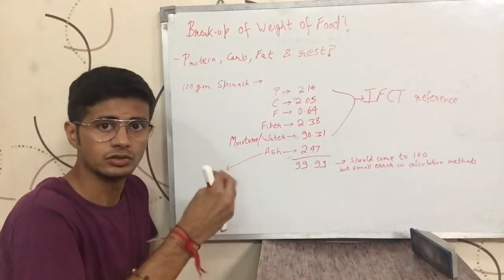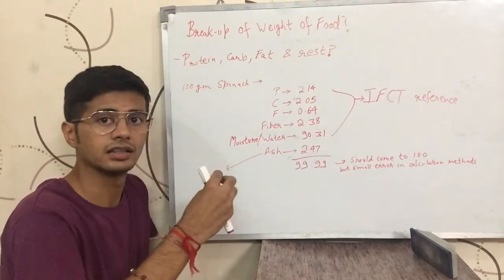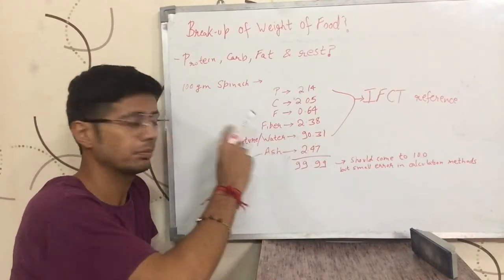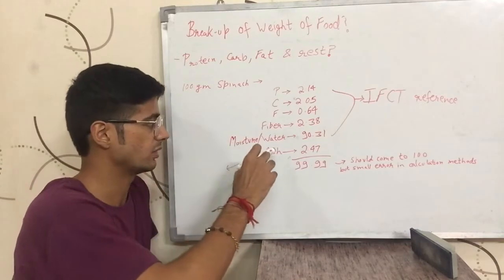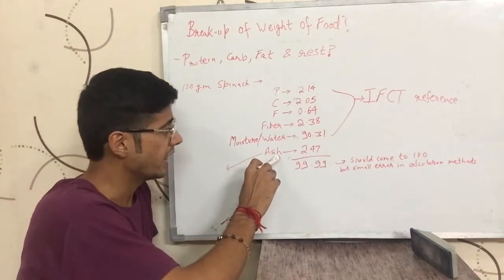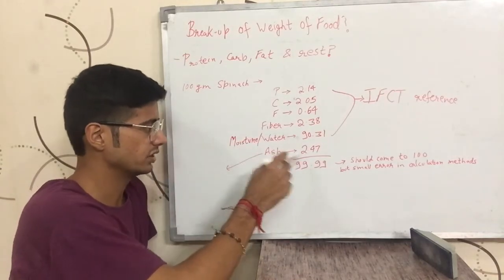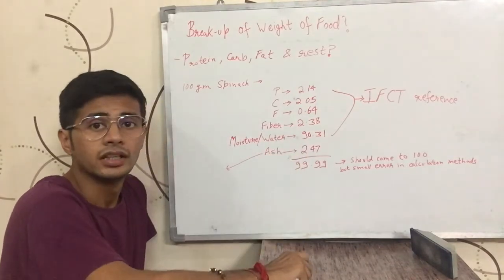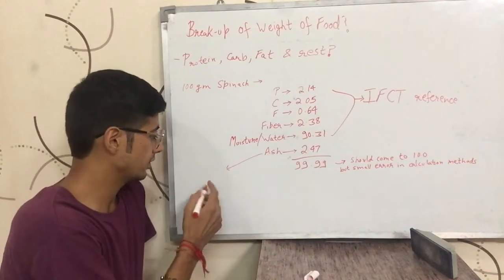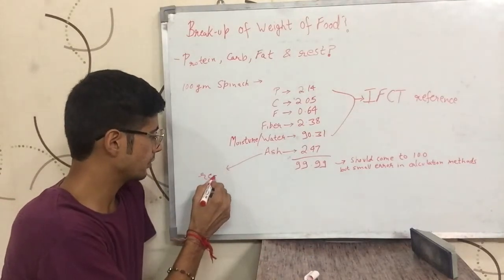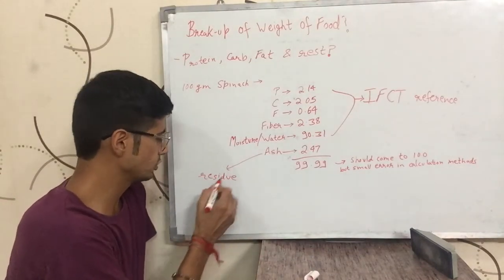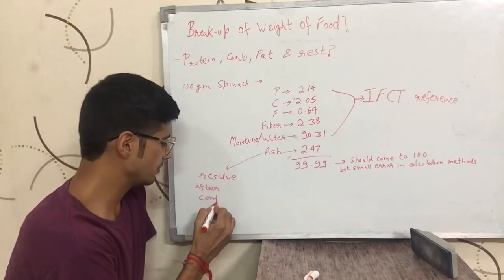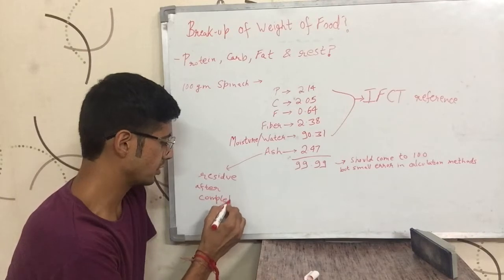The moisture is present in significant amounts. There is also fiber content. Then after that, there is something called ash.